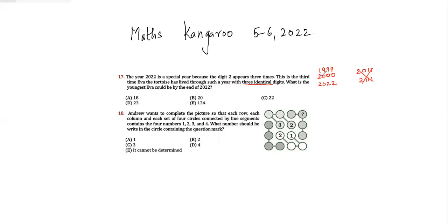So 1999 could be the year when Eva was born. By the end of year 2022, what is the youngest Eva could be? If Eva was born in 1999, by the end of 2022 Eva would be 23 years old. So my answer would be option D, 23.